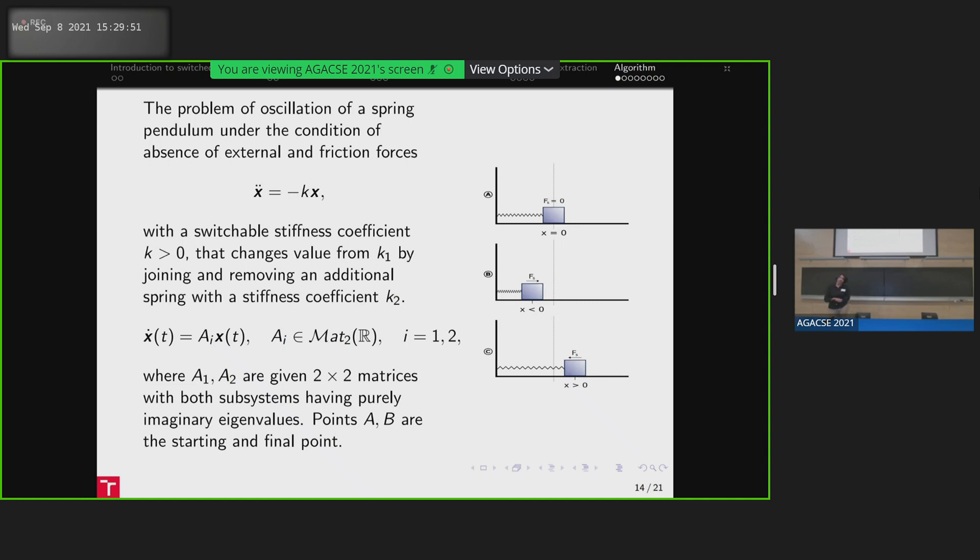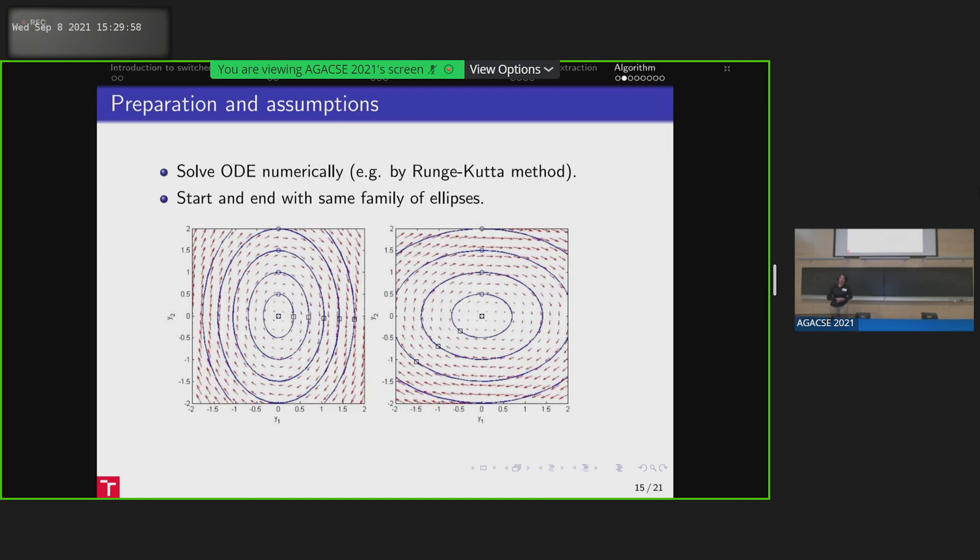And now we are back to our switch system. So reminding, we are playing around the oscillation problem. So in case we want to start classical approach, we are having this phase portrait for the first system. This is non-rotated case. Non-rotated case is in the case when we have switched system oscillations without damping. So how it works. So for example, you are going to get from one point to another one. You are getting by the trajectory and you need to switch to the second trajectory and move across to the needed one. We will make a small assumption. We will start and end with the same family of ellipses.